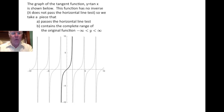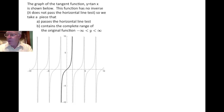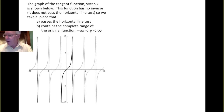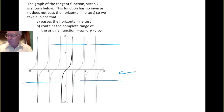We take a look at the graph of the tangent function, as we see down here. We see that it does not satisfy the horizontal line test. All these horizontal lines intersect the graph in several points — in fact, infinitely many — because this dark piece of the graph keeps repeating.